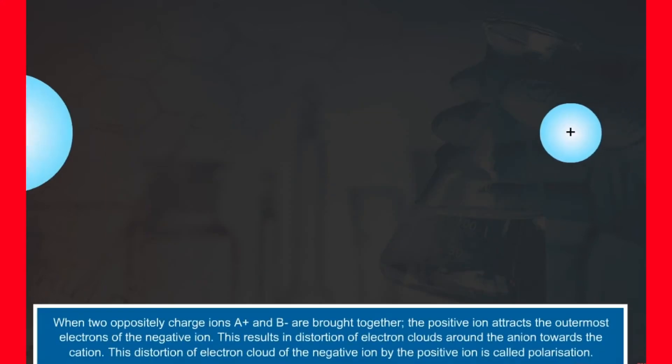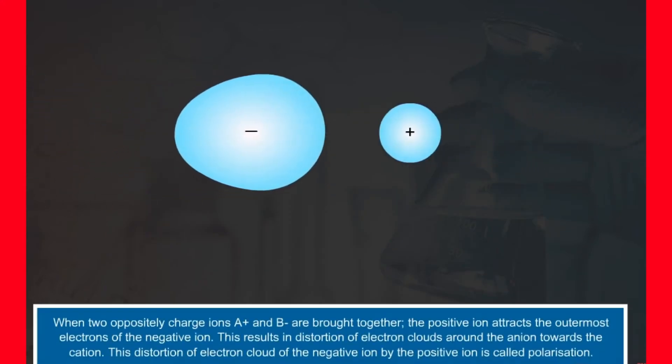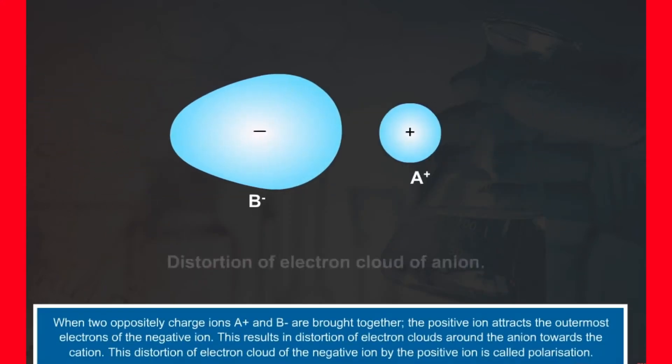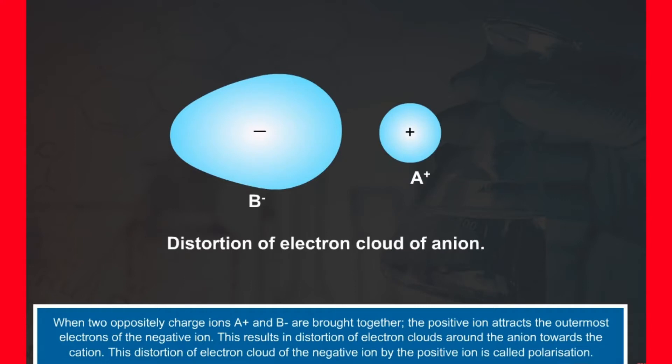When two oppositely charged ions, A-plus and B-minus, are brought together, the positive ion attracts the outermost electrons of the negative ion. This results in distortion of electron clouds around the anion towards the cation. This distortion of the electron cloud of the negative ion by the positive ion is called polarization.